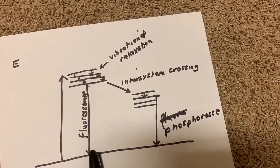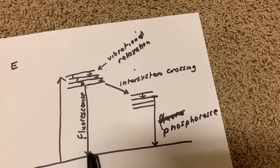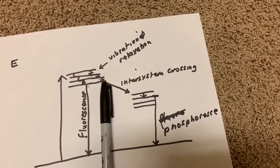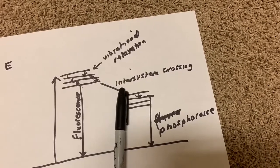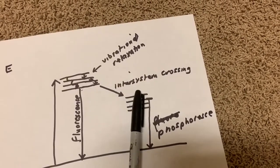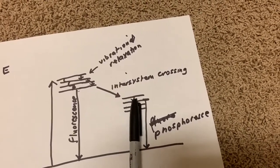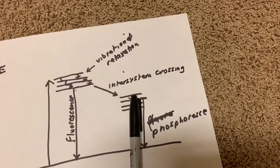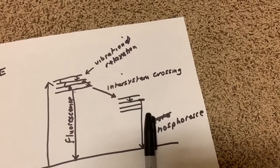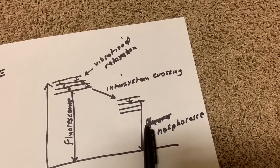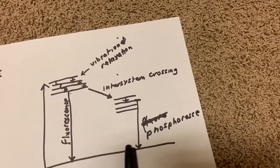This could be green light. But instead of re-emitting the light as green light, it undergoes energy crossing to a different set of energy levels. Then you get some vibrational relaxation, and it drops down to the original energy level. This process can take several seconds.